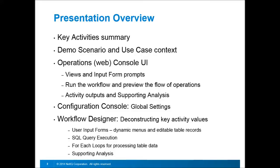We'll then switch to the configuration console, look at creating some global settings — global parameters that can be used in Input Builder inside the workflow. In the workflow designer, we're going to look at the workflow itself, deconstruct some of the key activities used to process the data, and look at how those are configured. We'll look at the user input forms, including dynamic menus created from SQL data and SQL table records placed in an input form and how we can make those editable. For SQL query execution, we'll look at the SQL activities for querying data records, making updates to tables, and executing a stored procedure. We'll also look at the for-each loop used to process SQL table records and the supporting analysis configuration.